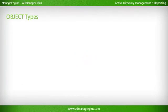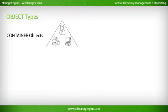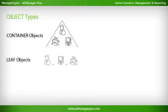Object Types: Container Objects are objects that contain other objects, like domains, organizational units (OUs), users, computers, and groups. Leaf objects are objects that cannot contain other objects. Examples of objects include Users, Computers, and Printers.